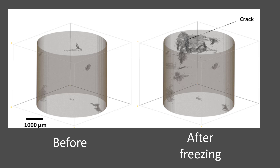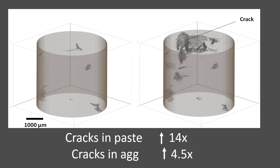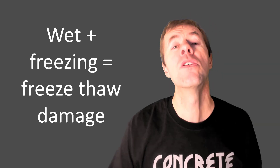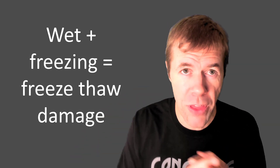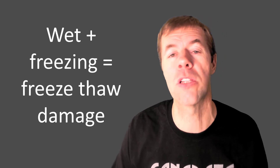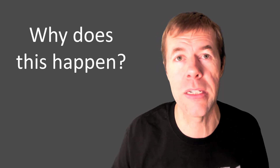There were some cracks before, but after some freezing and thawing, we start to see a lot more cracks. We saw these cracks happen inside the paste about 14 times more often than we did in the aggregates, but the aggregates do crack. So if you get a wet concrete and then it freezes, you will get yourself some freeze-thaw damage.